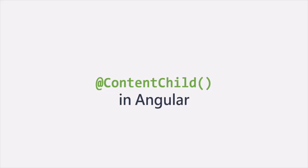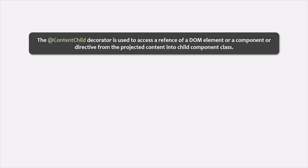In this lecture, let's learn about the ContentChild decorator and what is its use in Angular. The ContentChild decorator is used to access a reference of a DOM element, a component, or a directive from the projected content. And this reference we can access from the child component class.